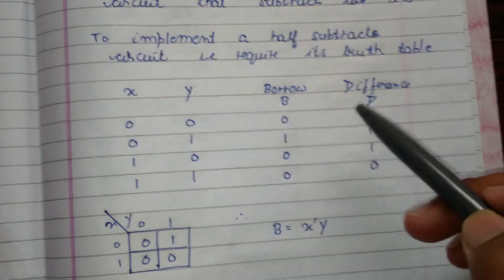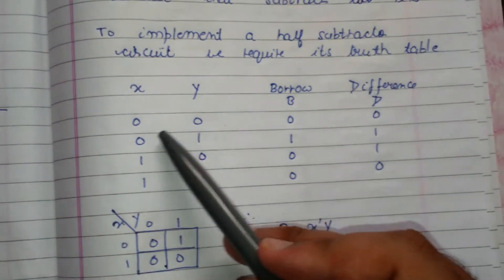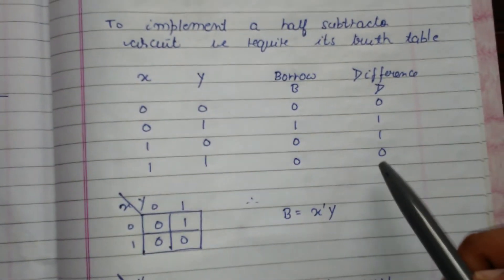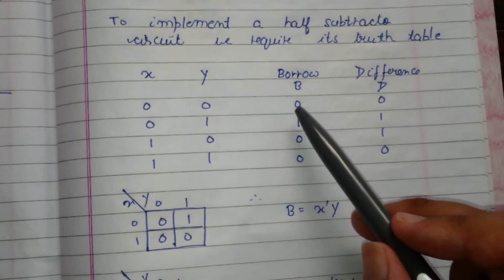Now to implement a half subtractor circuit, we will first make that truth table. When both inputs are zero, difference is zero. When zero one, difference is one. One zero, difference is one. And one and one, difference is zero. It's simple.